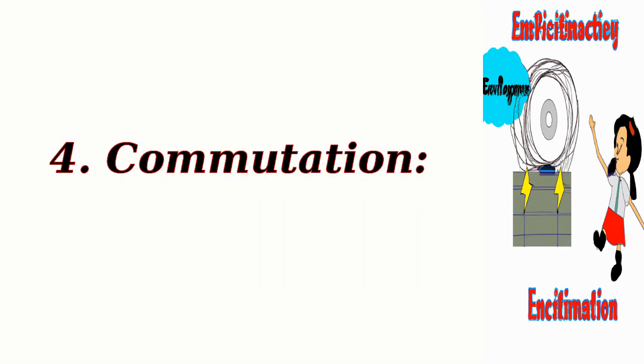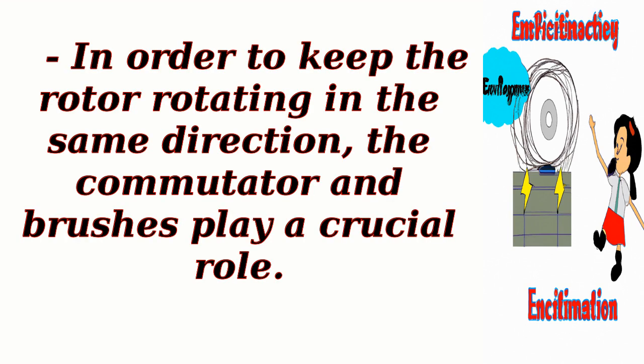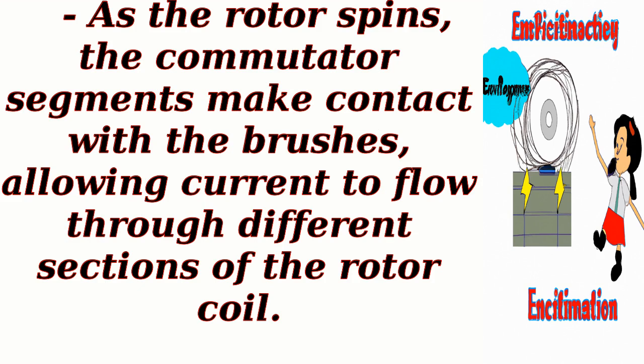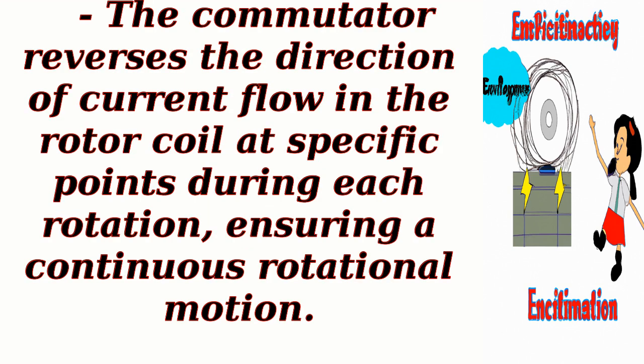Commutation: In order to keep the rotor rotating in the same direction, the commutator and brushes play a crucial role. As the rotor spins, the commutator segments make contact with the brushes, allowing current to flow through different sections of the rotor coil. The commutator reverses the direction of current flow in the rotor coil at specific points during each rotation, ensuring a continuous rotational motion.